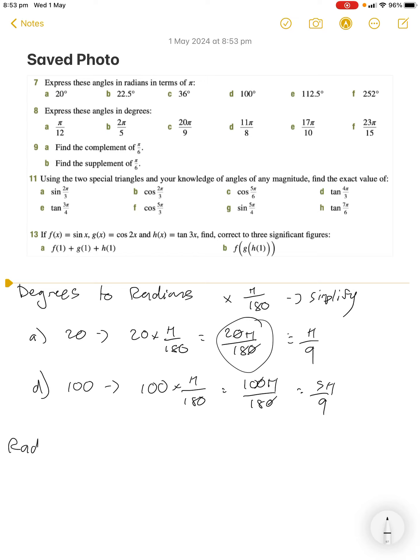To go from radians to degrees, that is much easier. We multiply by the opposite: 180 over π. And this is something you can type in your calculator to avoid errors. So if we're looking at 8a.